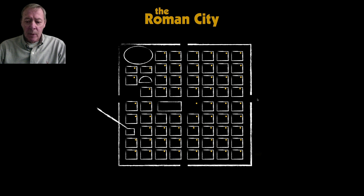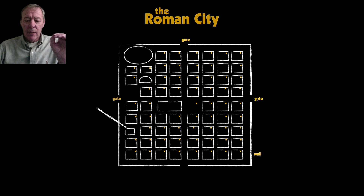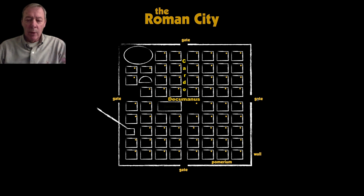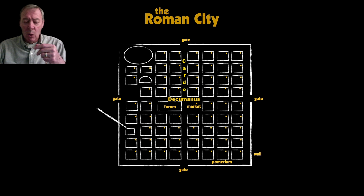Here we see a typical Roman city. Not all had walls, but when they did, a wall would be built around it with gates on the four cardinal directions, just like the defensive wall of a castrum. The space between the wall and the rest of the city was called a pomarium, left empty primarily for defensive purposes. The cardo and decumanus intersected at the center, where you would find the forum—the main civic center—along with markets conveniently placed nearby.